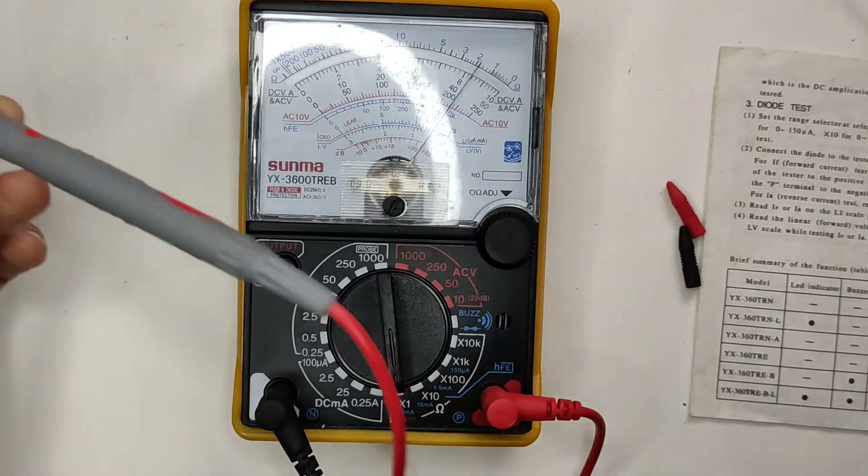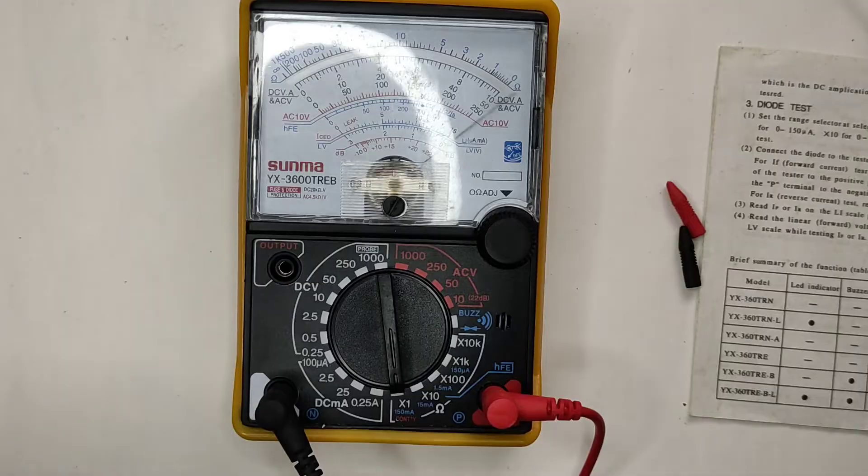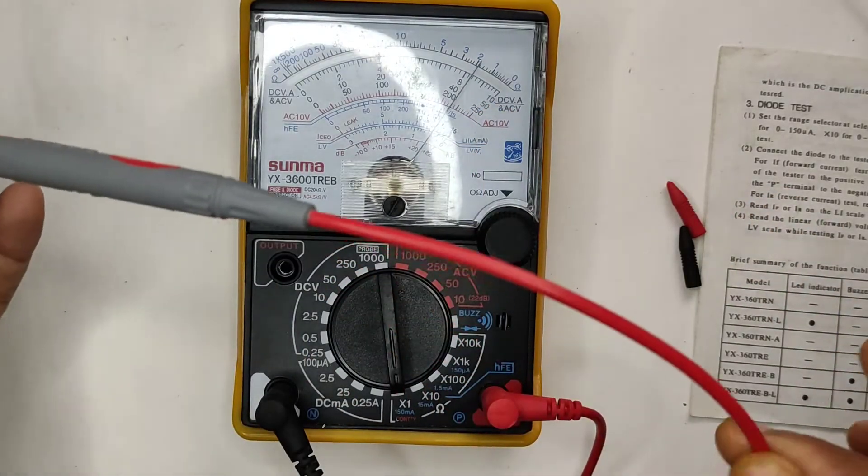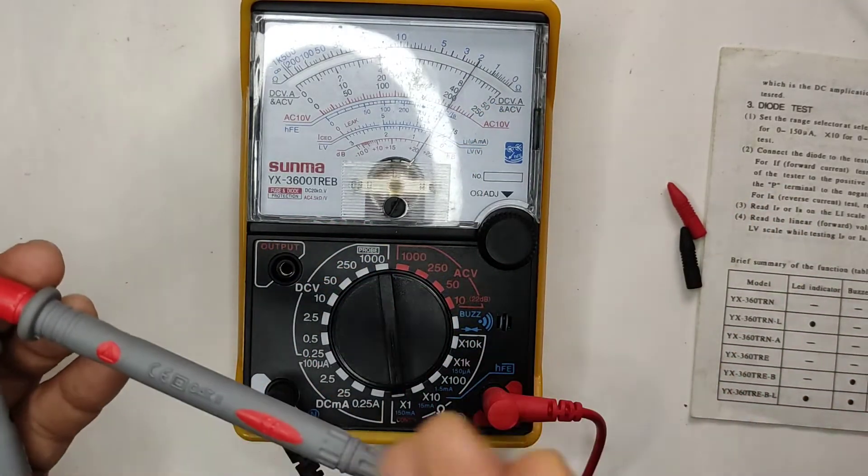If I change it to continuity mode, which is right here, it's going to show right now the cable resistance that is around two to three ohms. That's what this is showing because this is not the original probe, this is just a probe that I put from the market.